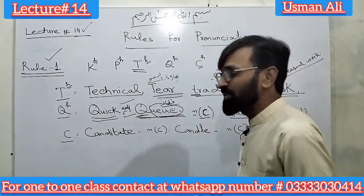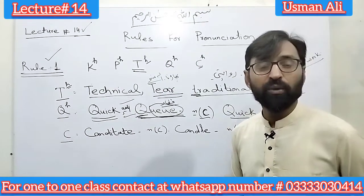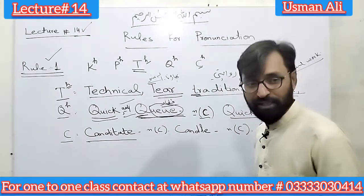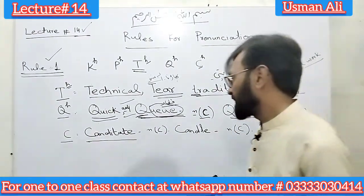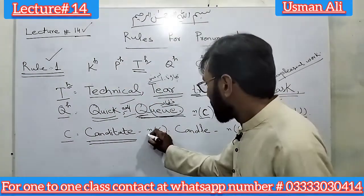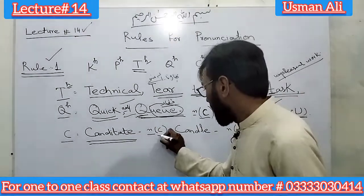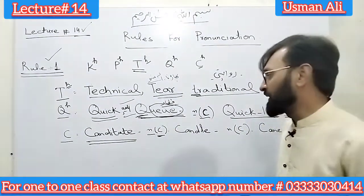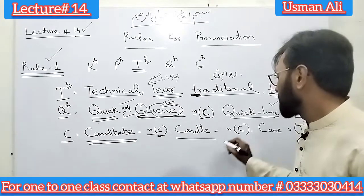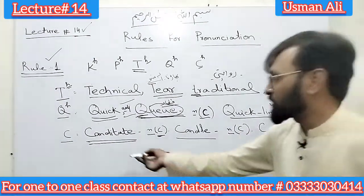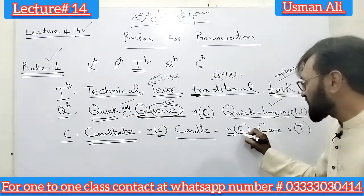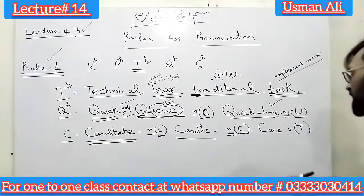Now C — especially when it gives the sound of K. First word: 'candidate'. It is a noun and it is a countable noun — candidate، جس کو امیدوار کہتے ہیں۔ Next: 'candle'. Candle is also a noun and it is a countable noun — موم بتی جو جلانے کے کام آتی ہے، اس کو candle کہتے ہیں۔